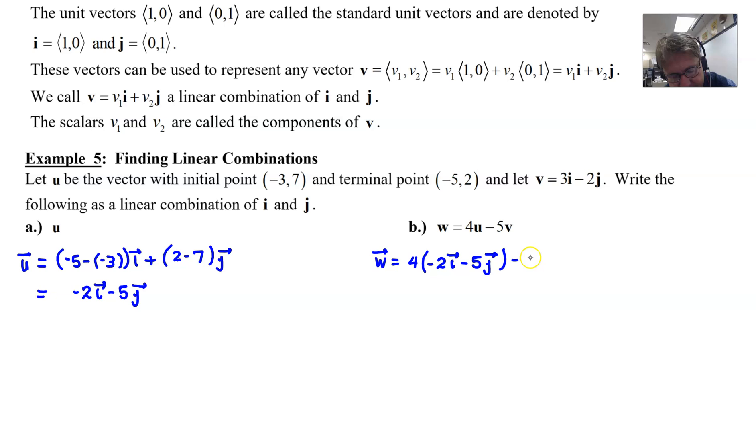And then for minus five times vector v, I'll set that up in a similar fashion. Remember, vector v was given to us up here as 3i - 2j.